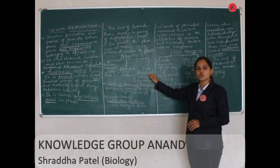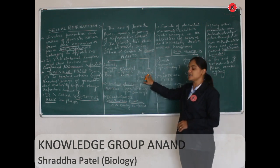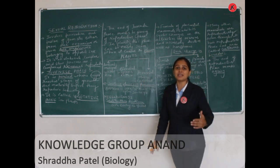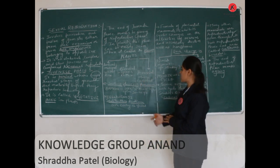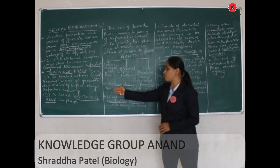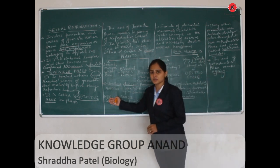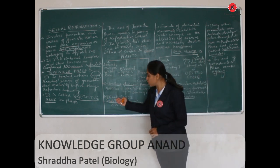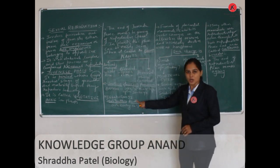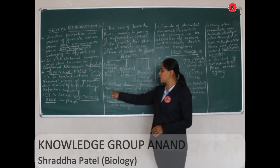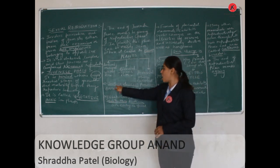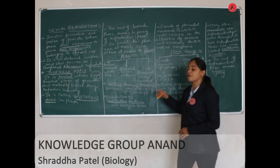Perennial plants flower many times throughout their lifetime. Examples include coconut. Now, talking about bamboo and Nilakurinji — the scientific name of Nilakurinji is Strobilanthus kunthiana — these plants exhibit unusual flowering phenomena.